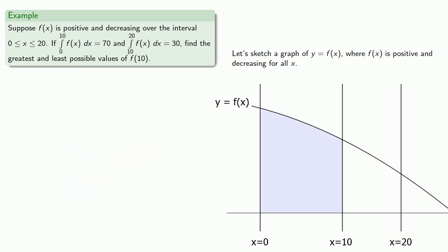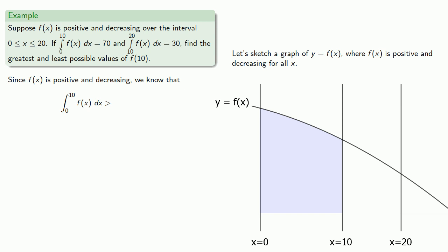And since f of x is positive and decreasing, then the area of the region will be greater than the area of the right rectangle, and that right rectangle has height f of 10 and width 10 minus 0. And so this tells us something about f of 10, namely that it has to be less than 7.